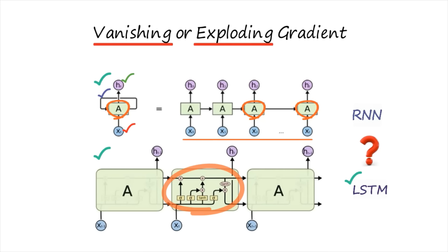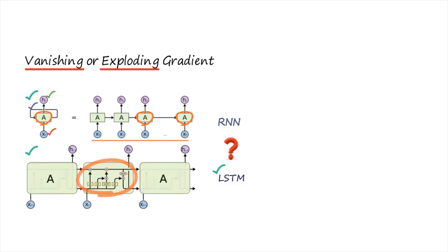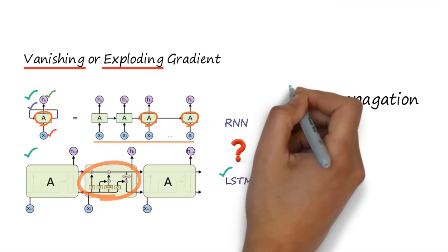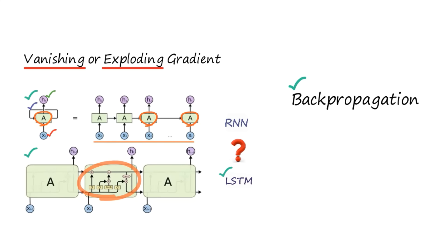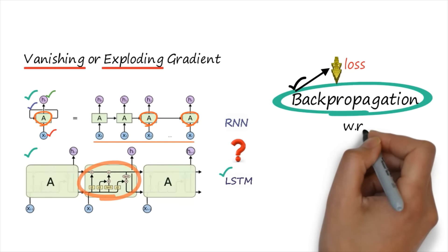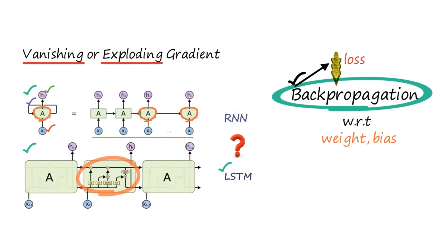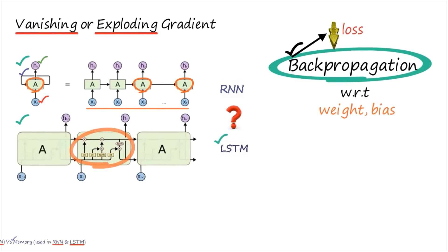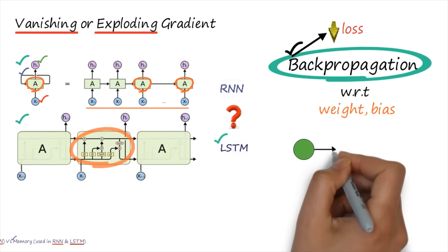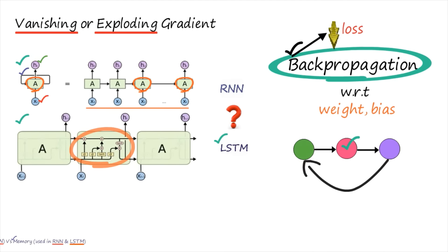Backpropagation is the mechanism used in the training activity of a neural network. Any neural network can use this backpropagation mechanism, and the ultimate aim is to minimize the loss function. Backpropagation is estimated with respect to the model parameters — weights, biases, and everything. Both RNN and LSTM use backpropagation. During backpropagation, data is sent from input through the hidden layers to the output layer, and then propagated back — and this is where some problems can arise.